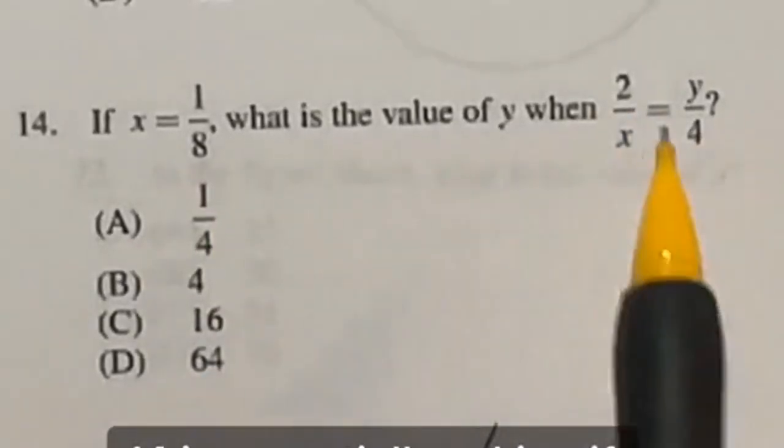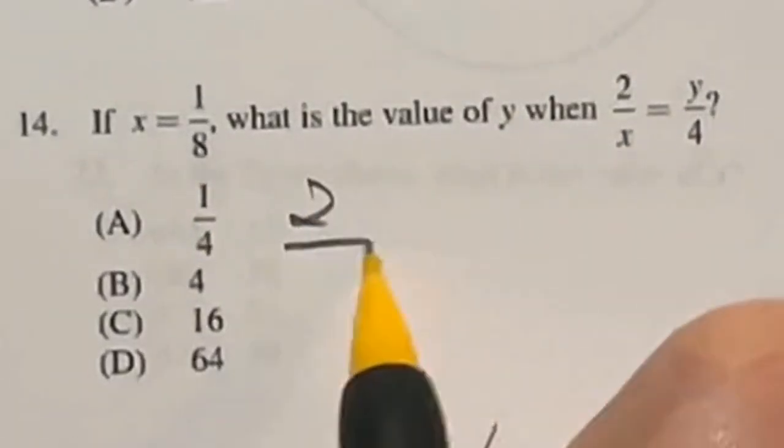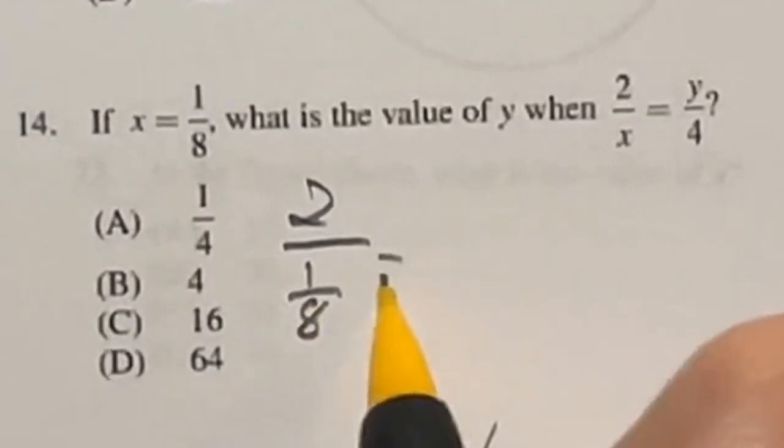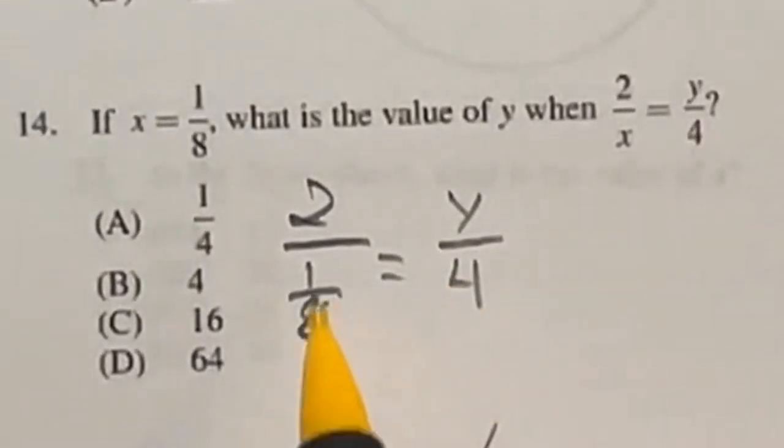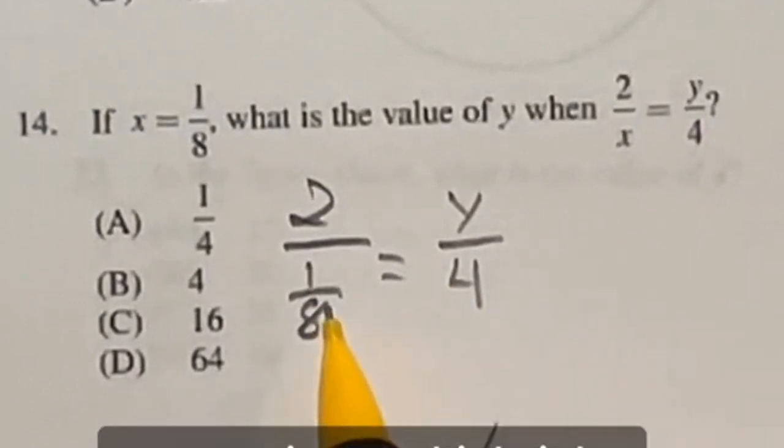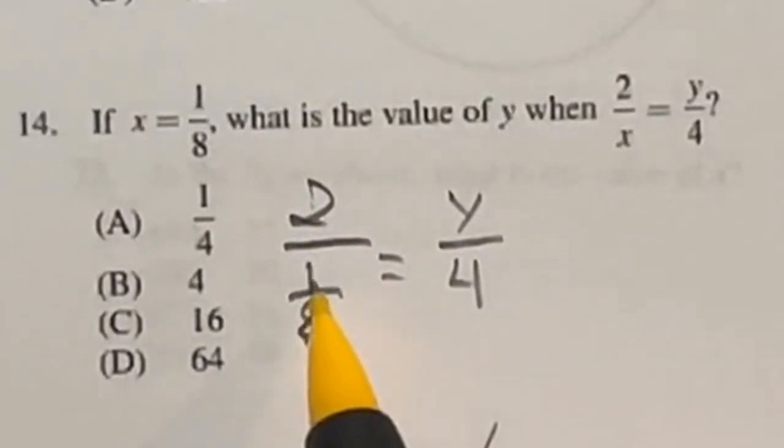14 is essentially asking if you know how to deal with fractions in an equation. So it says if x is one over eight, so I'm going to plug this in. Two over one over eight is equal to y over four. And then we have to solve for y here. Well, whenever you're dividing by a fraction, you can just multiply by the reciprocal, which means you flip it upside down. So really, this is just two times eight divided by one.